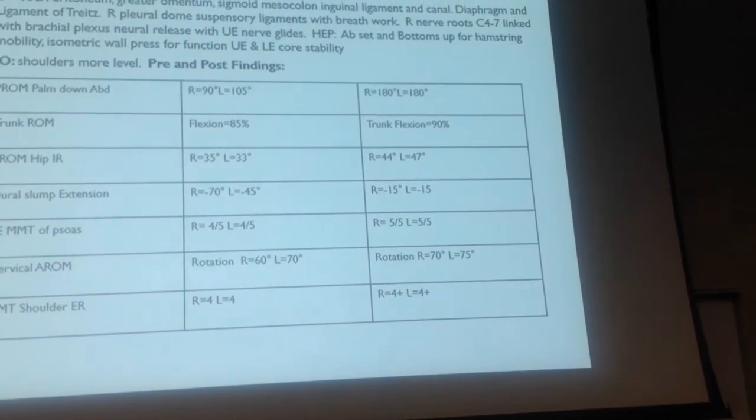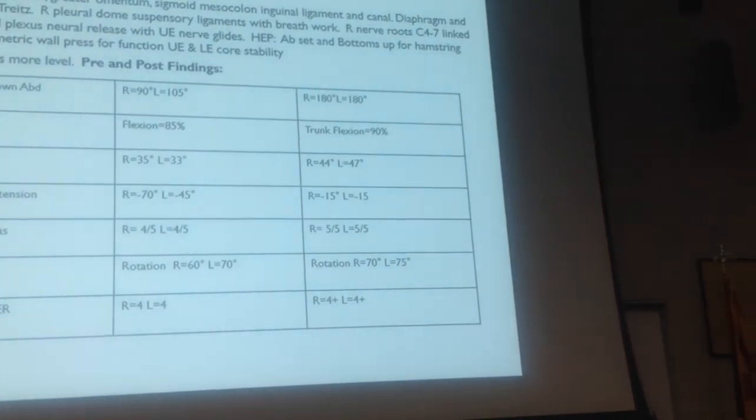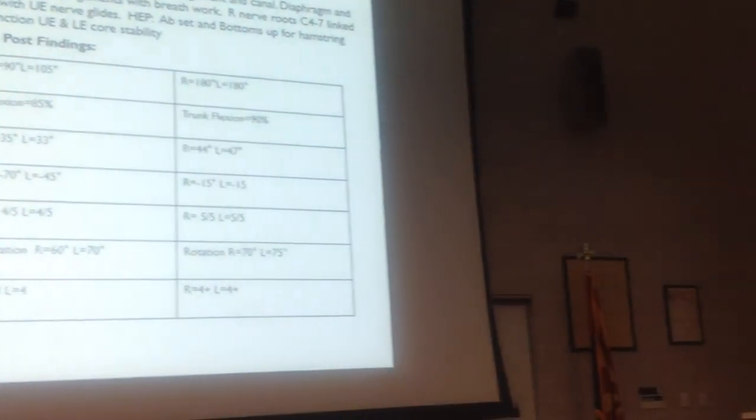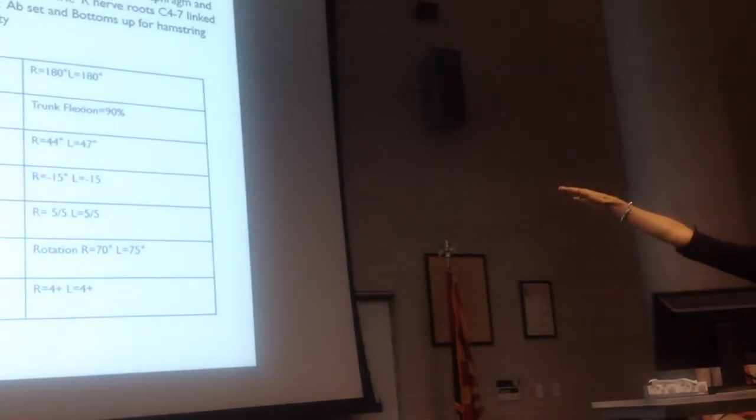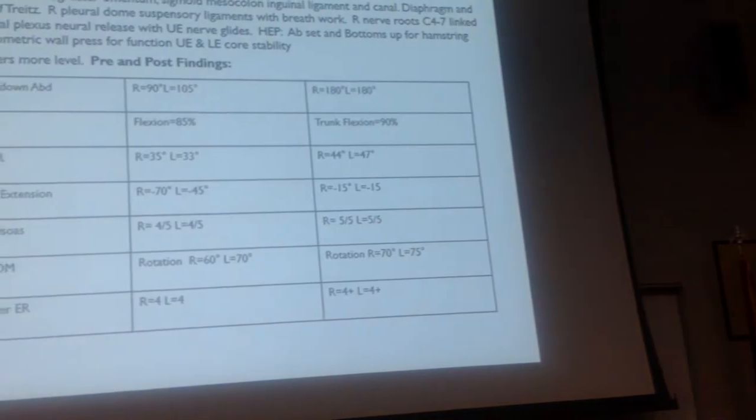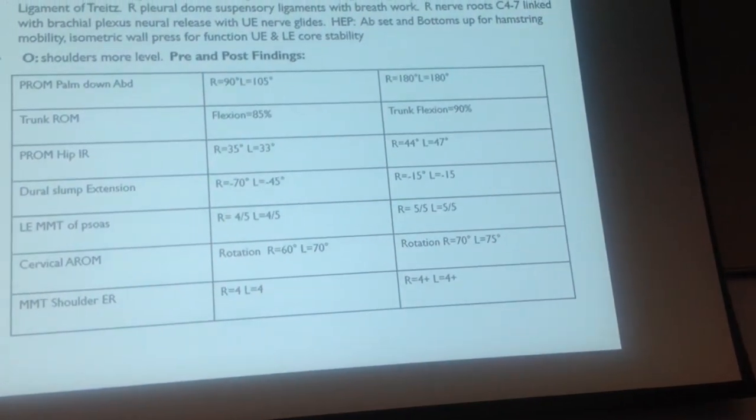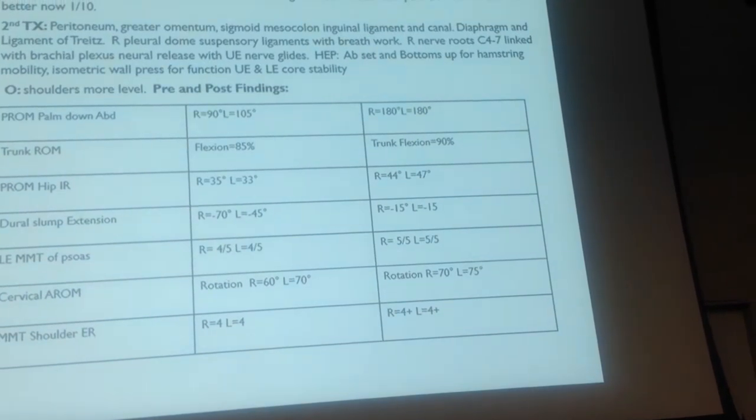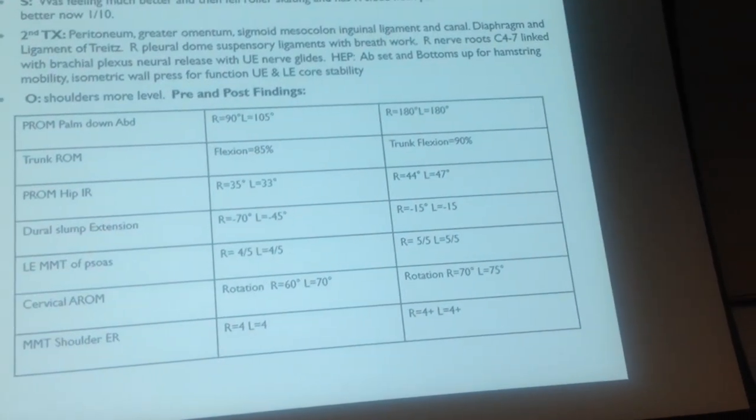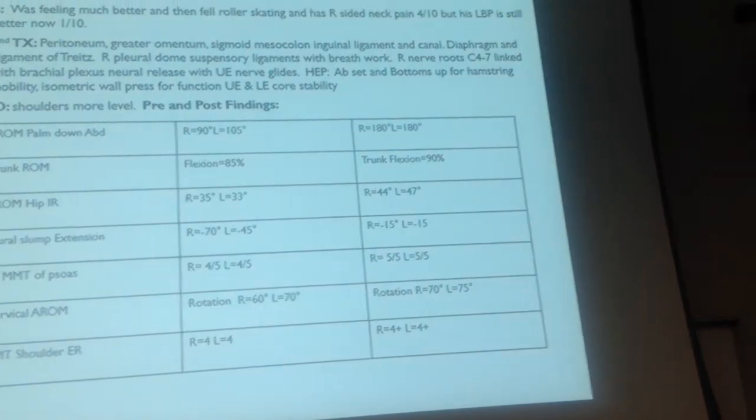After treatment, he finally was clear. Finally, his nervous system was letting him move. Trunk flexion was 90%. Hip range of motion, huge. That day one, he had 24 and 20. Huge changes. Dural slump tension, he had 85. Remember that day one? Now he's at minus 15. His psoas was kicking in better. His cervical range of motion improved. It was asymmetric still slightly, but much improved. And his shoulder strength had improved.